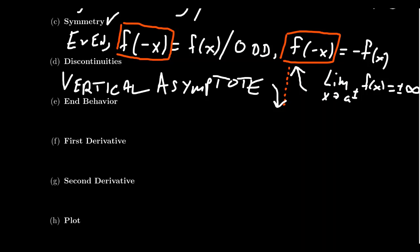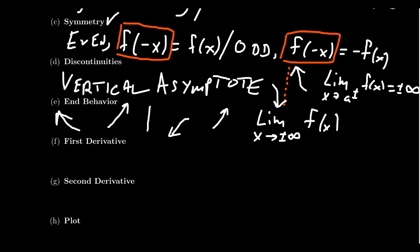End behavior, what do we mean by this? End behavior, we're trying to figure out what does the function do as it goes to the extremes, as it goes to the extreme of its domain, which oftentimes will be negative infinity or positive infinity. So like with a polynomial, is it going up on the right-hand side? Is it going up on the left-hand side? Maybe it goes up on the right-hand side, but down on the left-hand side. So what's the limit as X approaches plus or minus infinity? That's what we mean by end behavior here. Oftentimes this might be plus or minus infinity itself, or it might be a finite number. If this limit turns out to be finite, that's because we have a horizontal asymptote.